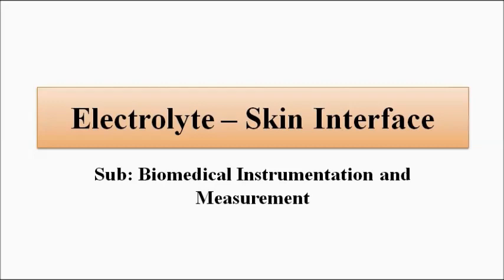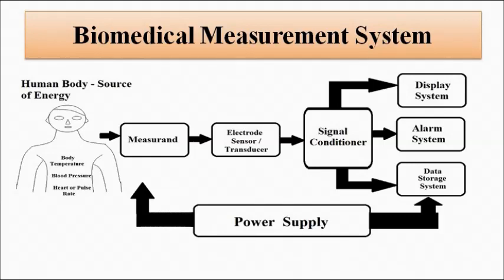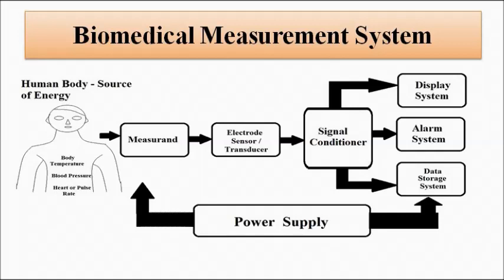We know that in the biomedical measurement system, electrodes are used to pick up the bioelectric signals from the body — be it ECG, EEG, EMG, temperature measurement, blood pressure, or any other physiological parameter. Depending on their type or the nature in which they are applied, electrodes are of two types: surface electrodes and deep-seated electrodes.